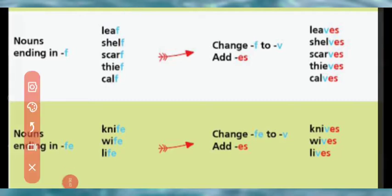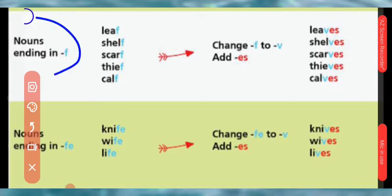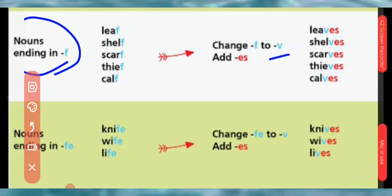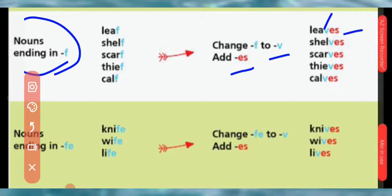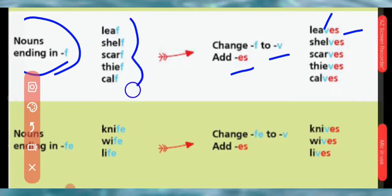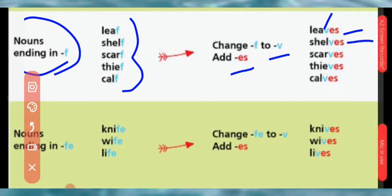Now, nouns that end in F. For these words, F is changed to V and ES is added to make the word plural. For example, leaf — replace F with V and add ES — so the plural of leaf becomes leaves. Similarly, shelf becomes shelves, scarf becomes scarves, and thief becomes thieves.